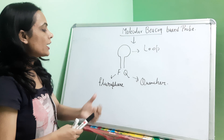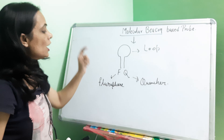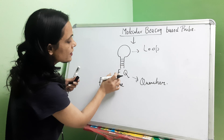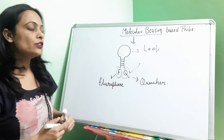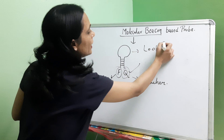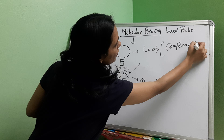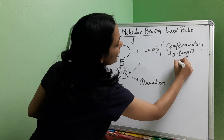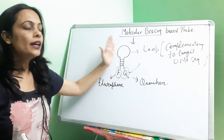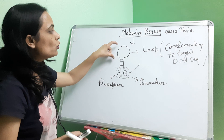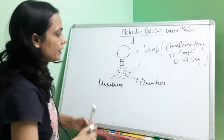This is the molecular beacon probe structure: a stem is present and a loop is present. In the stem structure, one side has the fluorophore and the other side has the quencher. The loop part is complementary to the target DNA — the loop part of our molecular beacon is complementary to the target DNA sequence which we want to amplify in the PCR. We add this probe to the PCR mixture, and the loop part will bind to the DNA sequence being amplified.